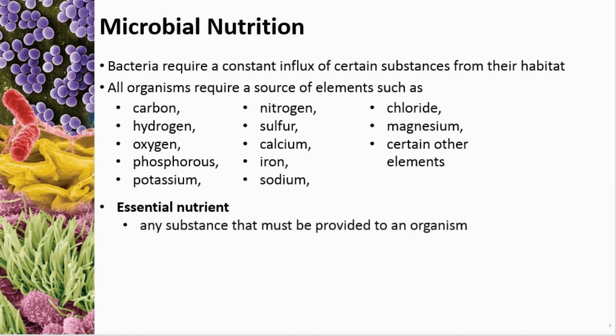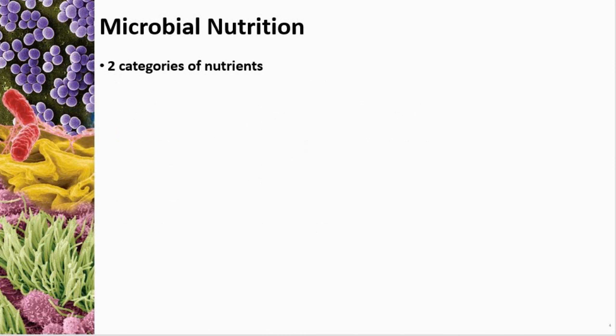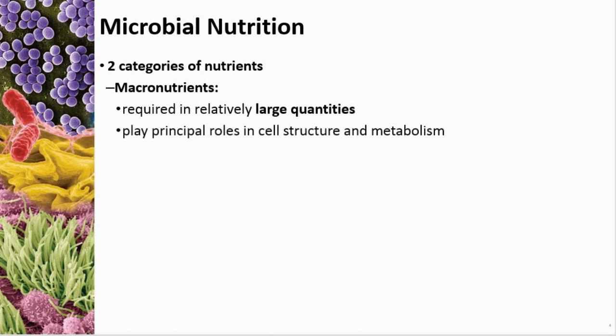Non-essential nutrients, although they are also necessary, are nutrients an organism can manufacture from other parts inside the body. There are two categories of nutrients: macronutrients, which are required in large quantities — macro means large. These make up the structure of the organism, large parts of the cell structure like cell membranes. Examples of macronutrients are carbon, hydrogen, and oxygen.